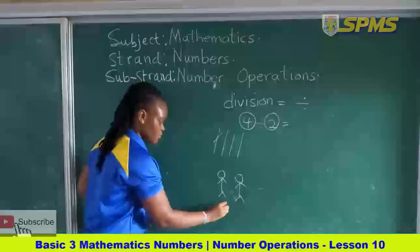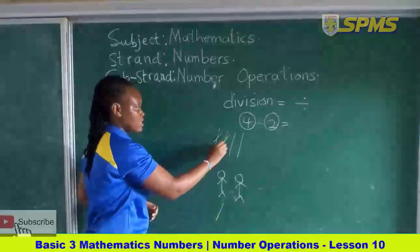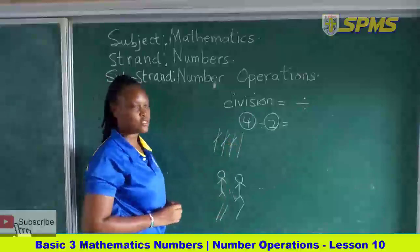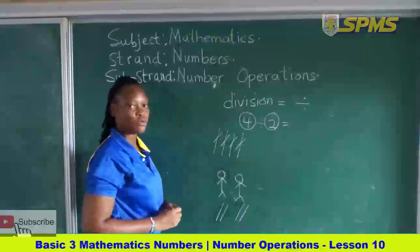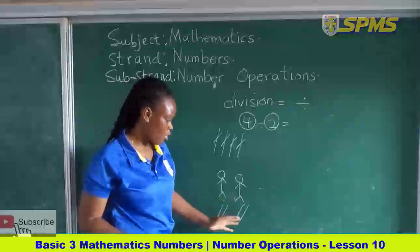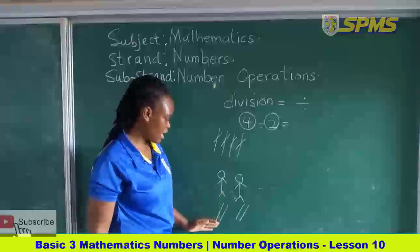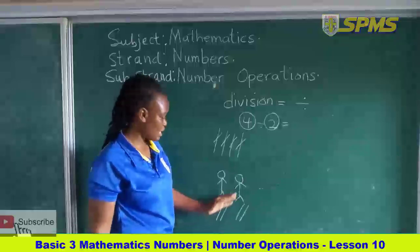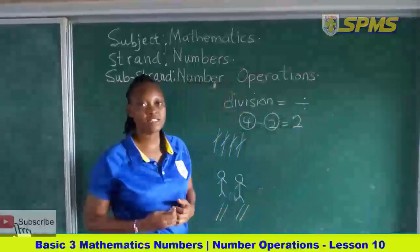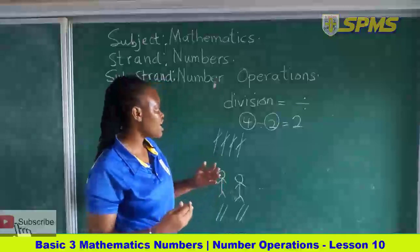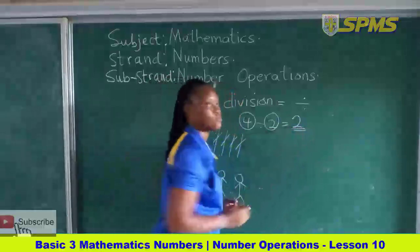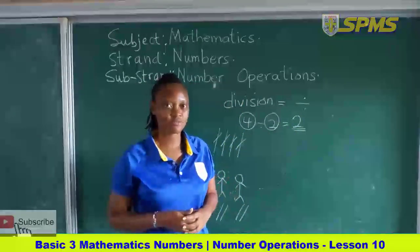So we take the first item and give it to this person, the second one goes to the next person, the third one will go to the first one, and then this last one will go to the second person. So we realize that they both have equal parts — the first person has two and the second person has two. So four divided by two equals two, because when we shared the four items among the two people, they both had two.